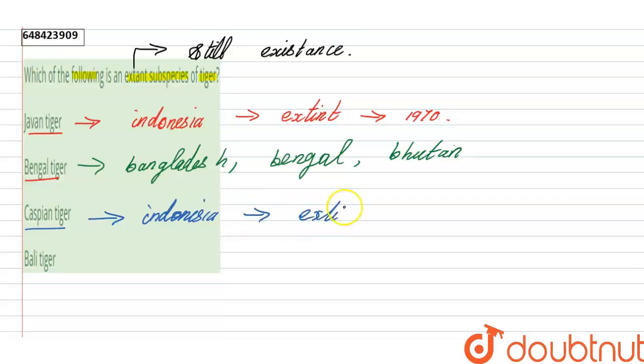They also went extinct in 1970. The next option is Bally tiger. Bally tiger belongs to Turkey and they went extinct in the year 1950.